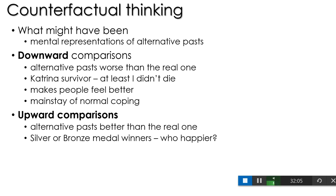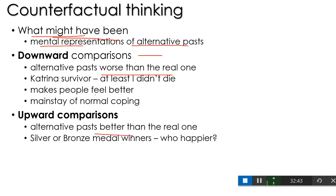Finally, counterfactual thinking. What is counterfactual thinking? It's thinking about what might have been — mental representations of alternative pasts. People do this a lot, and pretty much automatically. Counterfactual thinking is when we think of what could have happened. When we create counterfactuals, either the alternative past is worse than the real one, or better than the real one. Let's take a look at downward comparisons first.